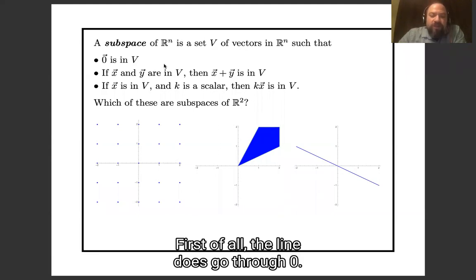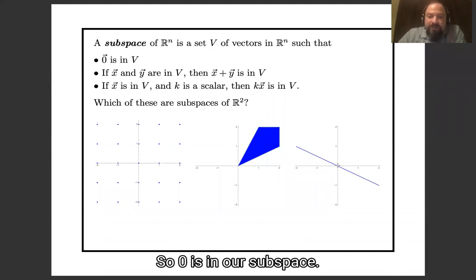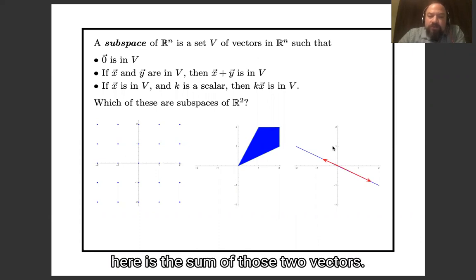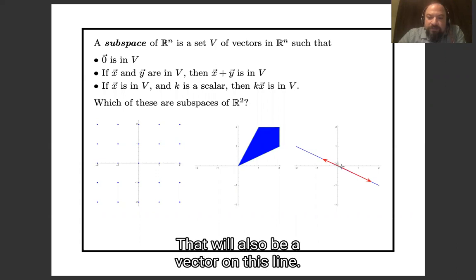So, let's see the conditions on the third one. First of all, the line does go through zero. So, zero is in our subspace. If I have two vectors on this line, and I take their sum, here's the sum of those two vectors.